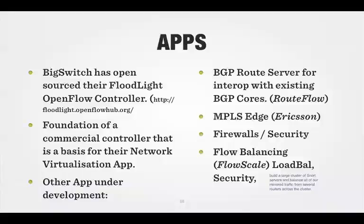Beyond BigSwitch, there are other companies building apps: BGP route servers for interoperating with BGP, in a project called RootFlow. Ericsson has deployments configuring an app that acts as an MPLS edge, interfacing towards an MPLS network and integrating with MPLS virtual circuits. There are firewall and security apps, though still a bit limited. And there's flow balancing — a project called FlowScale that does load balancing and security functions, intercepting and redirecting flows into SNORT servers for IDS. Transparent redirection, proxy servers, and what we currently use WCCP for is now a native function of OpenFlow.